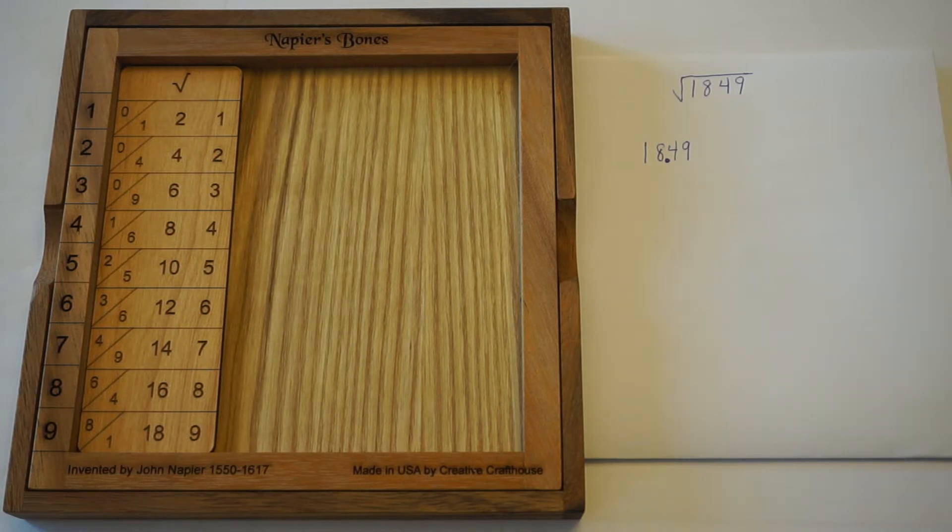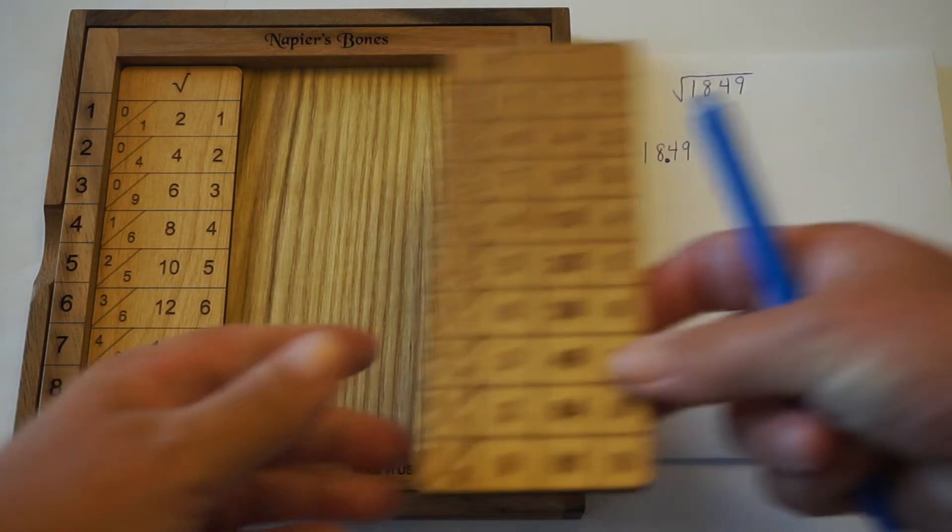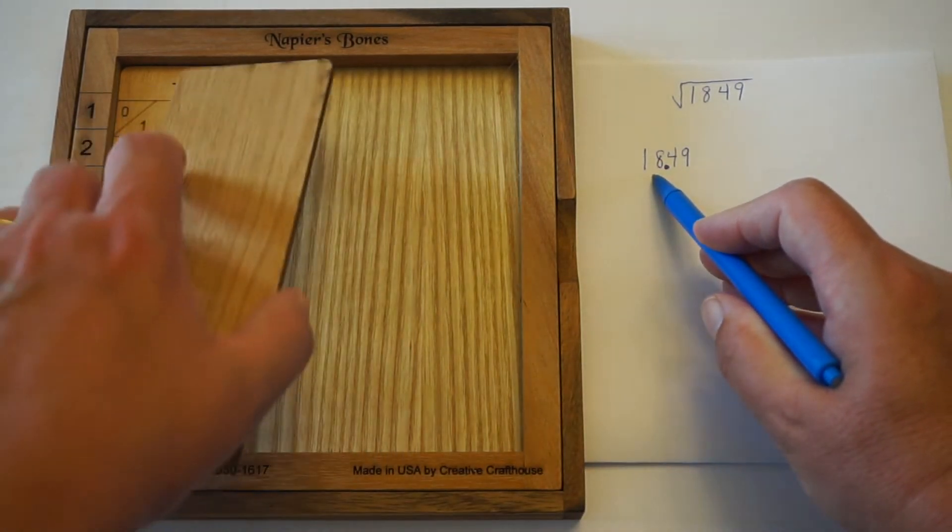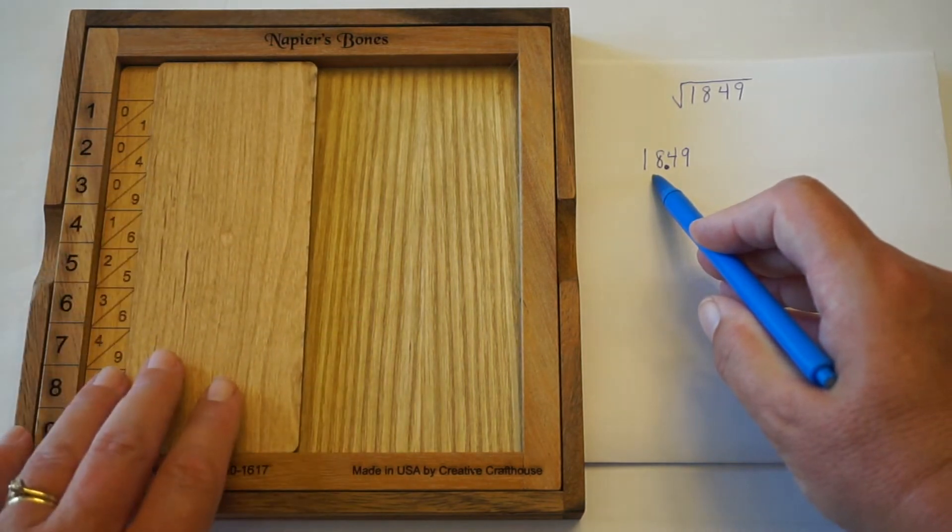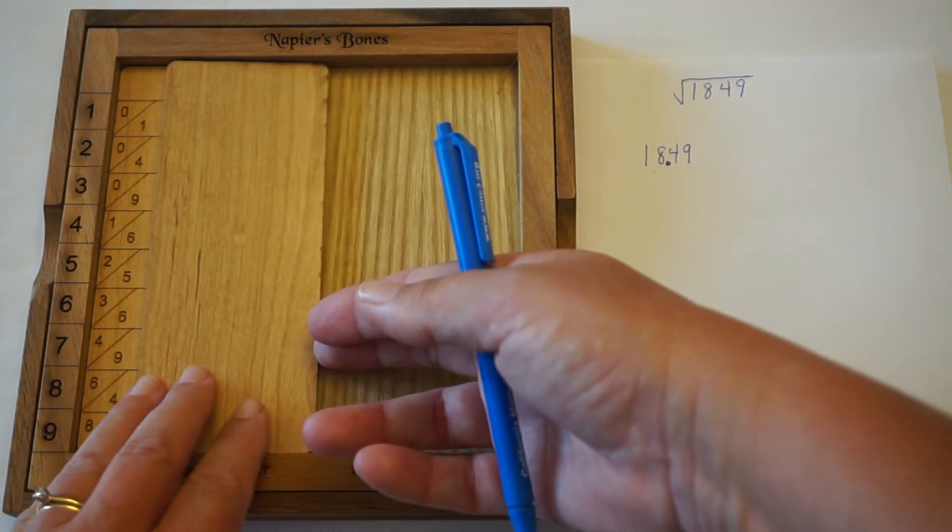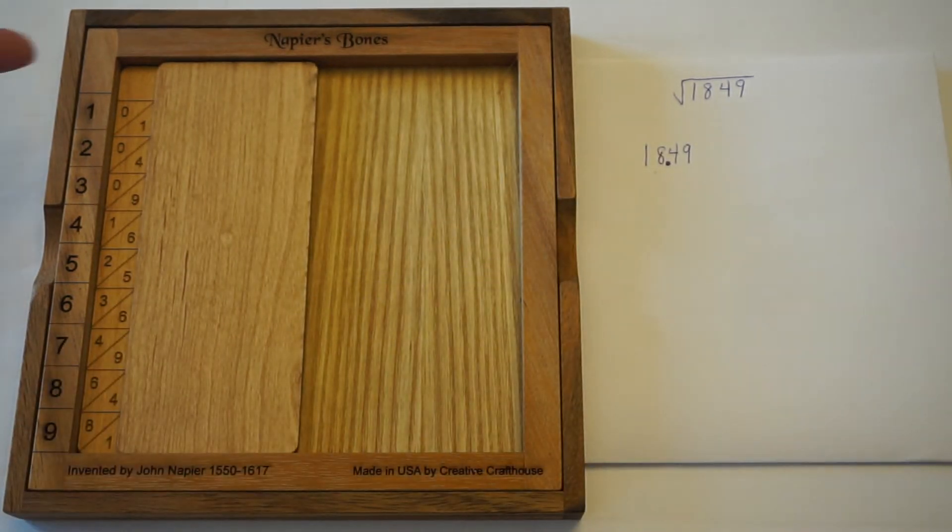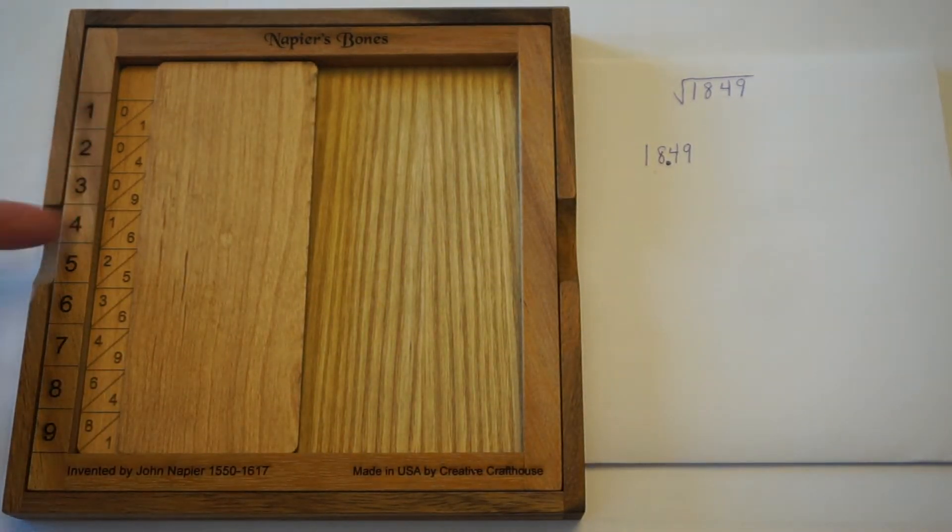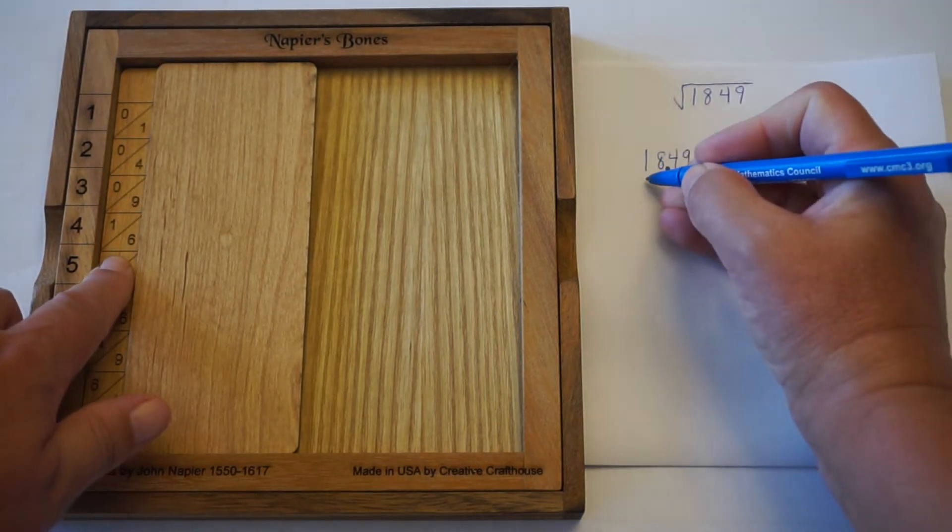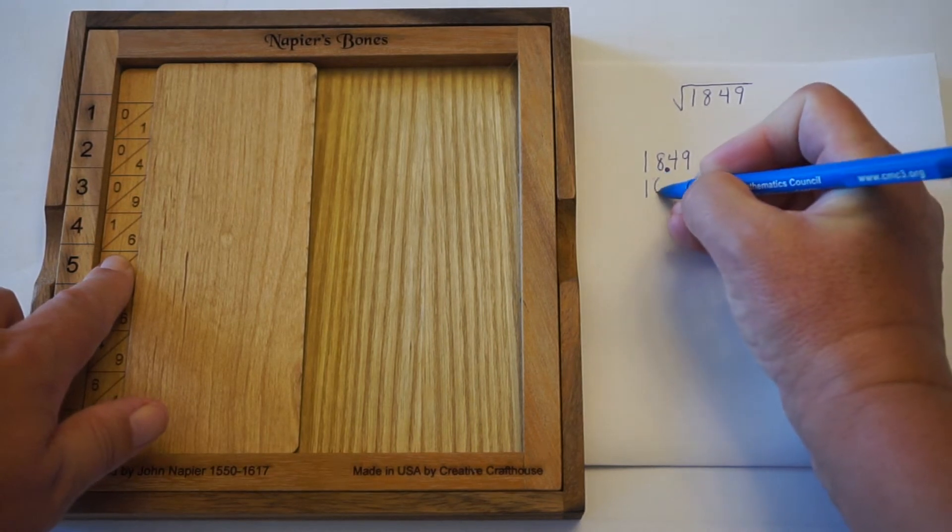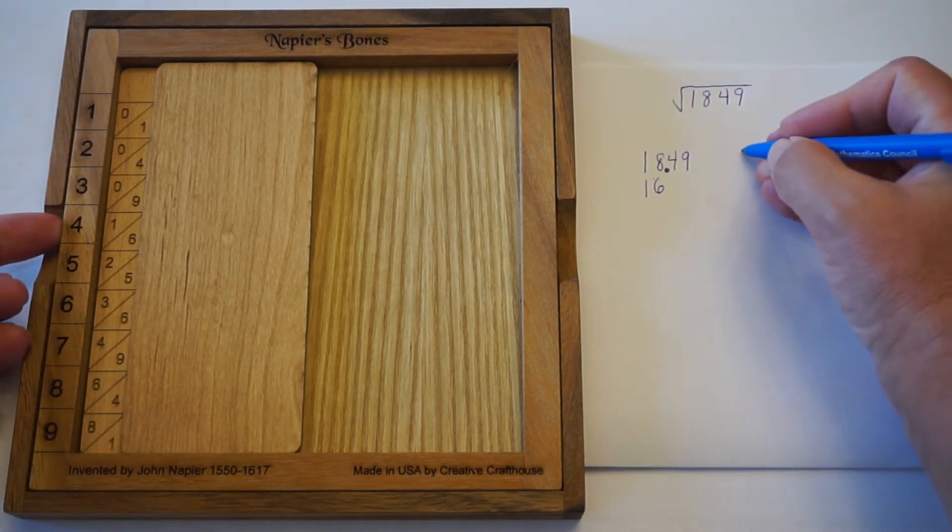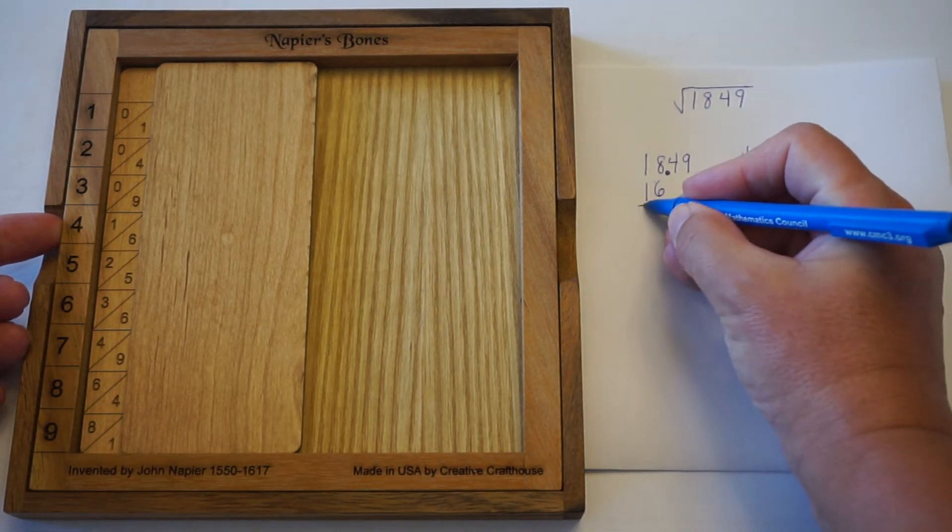And so what I do is, starting on the left, I look for the square that is closest to 18 without going over. And I'm just covering these other columns just so that we're focused on exactly what we need. As I look down the list, I see that there's a 16. That's the closest that I can get to 18 without going over. And 16 is 4 squared, so 4 is going to be the first part of my answer.